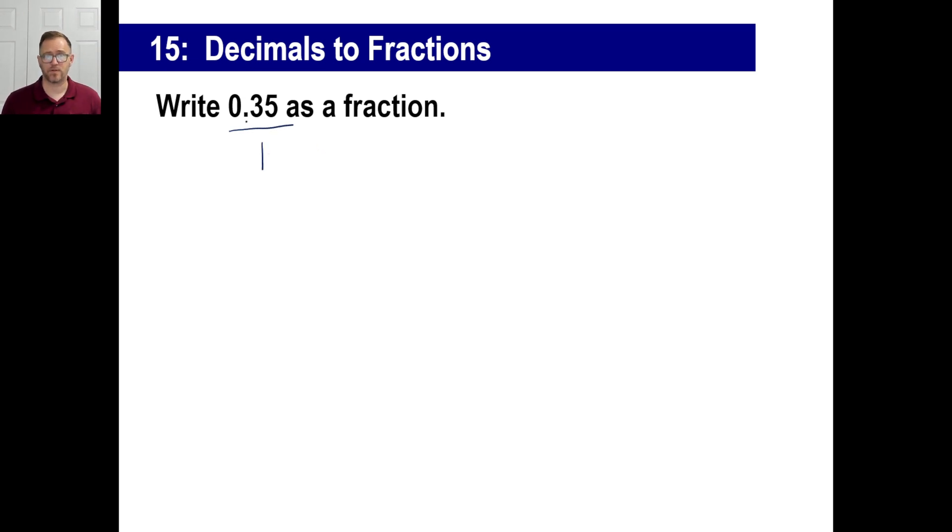To clean up both of these and make them both integers, you need to move this over twice, which gives you 35. And if you move this over twice, that gives you 100. Now, you don't want to leave this because it's not reduced.